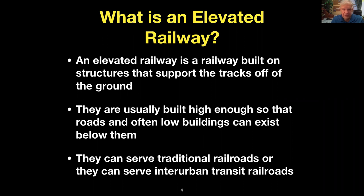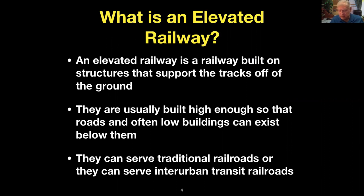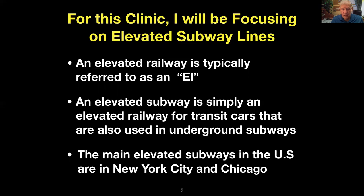So what is an elevated railway? It's basically a railroad built on structures that support the tracks off the ground. They're usually built high enough so that you can have roads and often even low buildings below them. They can serve a traditional railroad or urban transit railroads such as our Metro, which actually has a combination — elevated areas where it goes over the beltway, and then it goes underground. But for this clinic I'm going to focus on elevated subway lines.